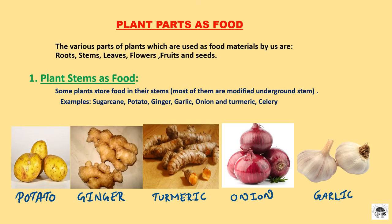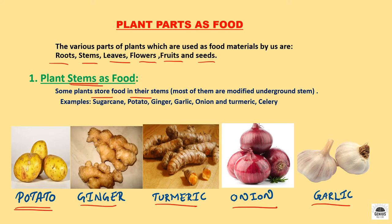Plant parts as food. We eat various parts of plants. For example, carrot, which we eat, is the root of a plant. All pulses are the seeds of plants. So we eat roots, stems, leaves, flowers, fruits and seeds of plants. First, plant stem as food. Aloo paratha is my favorite dish and the main ingredient is potato. Potato is the modified underground stem. Some plants store food in their stem. Examples of modified underground stems are potato, ginger, turmeric, onion and garlic.